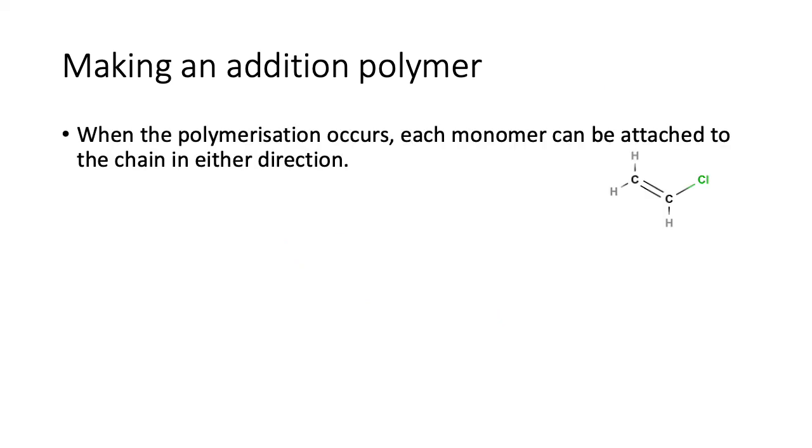When the polymerization occurs, each monomer can be attached to the chain in either direction. So what am I saying? That was what I was talking about with the A and the B. If this is the A carbon, this is the B carbon. You have a chain of carbons of which you know they're going to be in pairs A and B.